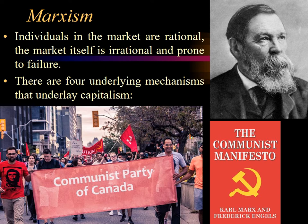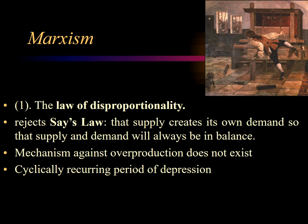There are four underlying mechanisms that are dysfunctional in capitalism. The first is the Law of Disproportionality, which rejects Say's Law — that supply creates its own demand and that supply and demand will always be in balance except for brief moments. The Law of Disproportionality rejects the equilibrating mechanism that makes market overproduction impossible. Marx argued instead that this mechanism does not exist, so there are periods where supply and demand do not match. There is thus a cyclically recurring period of depression and crisis that would eventually lead the proletariat — the wage labor in capitalism — into revolution against the owners of the means of production.